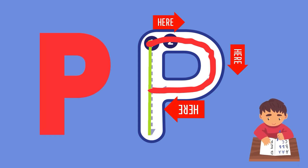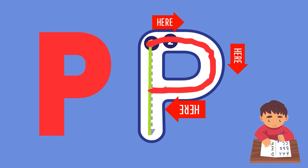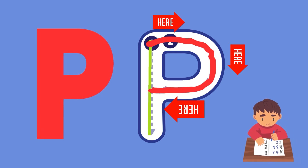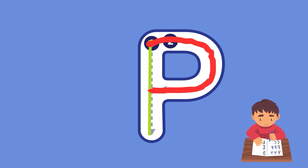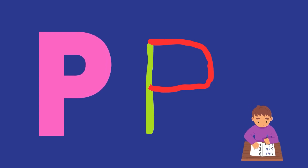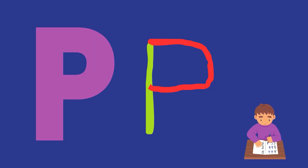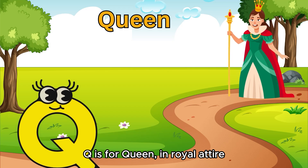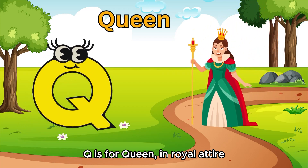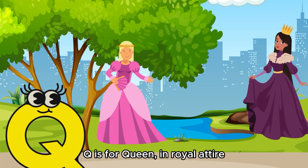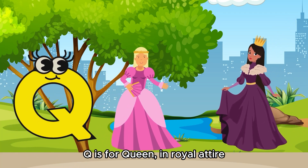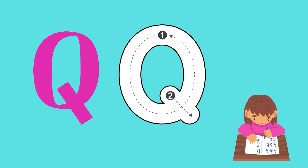Now let's start step two: start from point two, draw a round curve line clockwise and connect it to the center of line one. You have completed the second step. Congratulations, dear kids! Now you have completed the alphabet P.